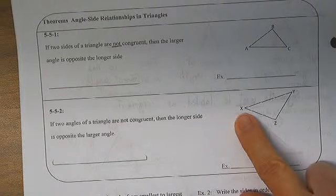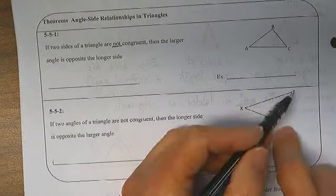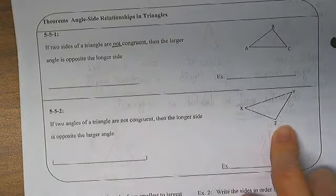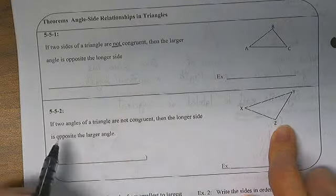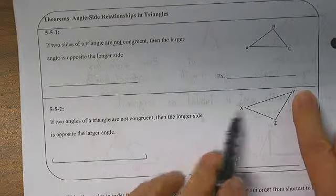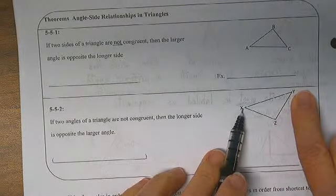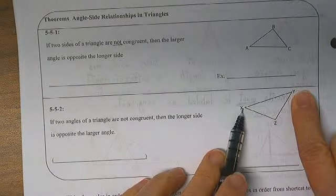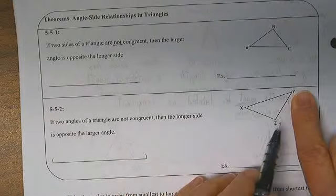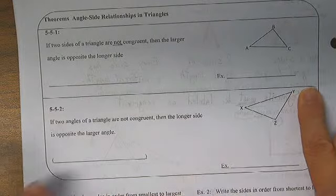Here we have angle X, angle Y, angle Z. XY has to be the longest side because it is across from the largest angle.